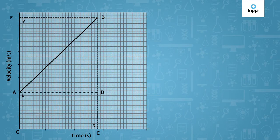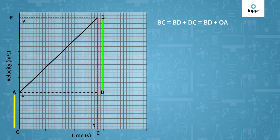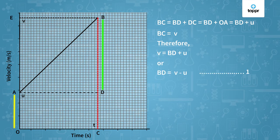Now let's look at this graph more carefully. So let's begin our derivation. You can see that this length BC can be expressed as BD + DC or we can say it's BD + OA which can also be expressed as BD + u and BC is v. So what we can say is that v = BD + u or BD = v - u. That's our equation number one.